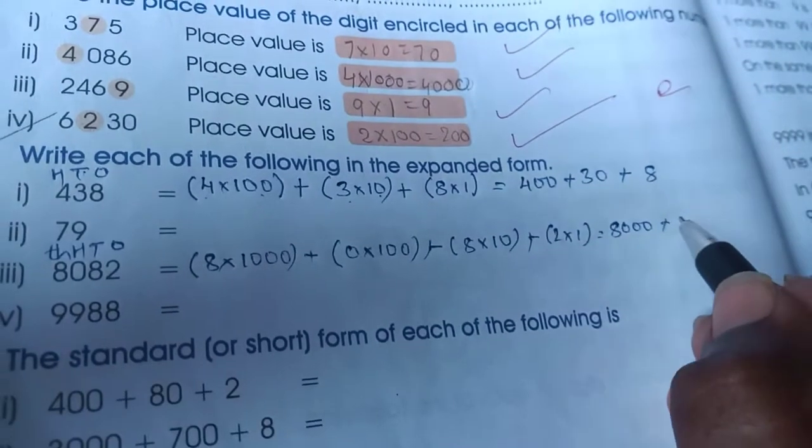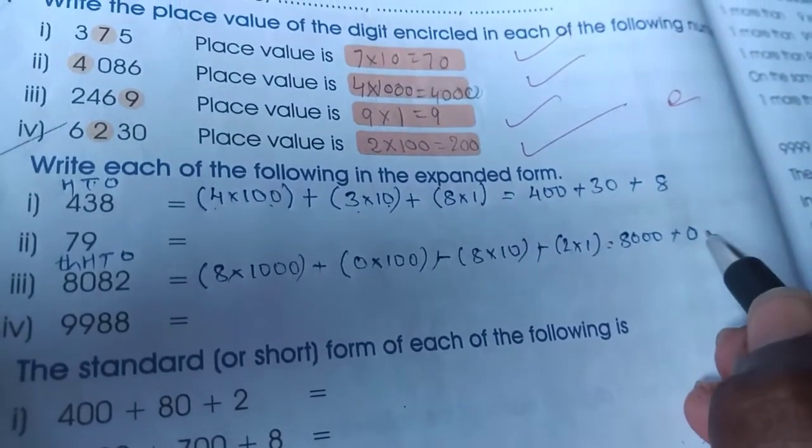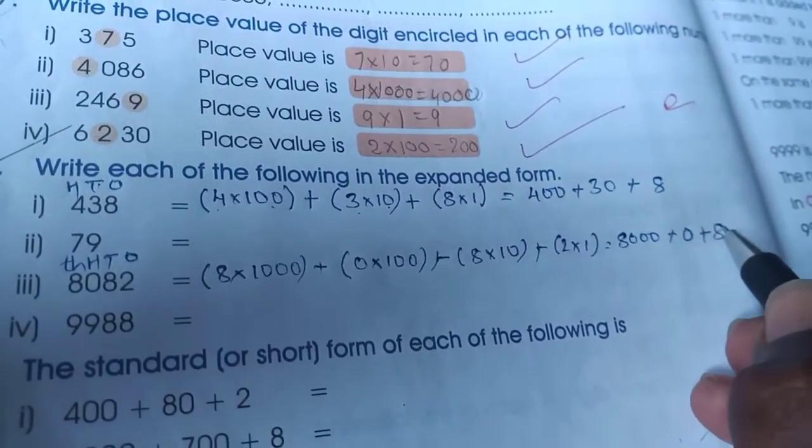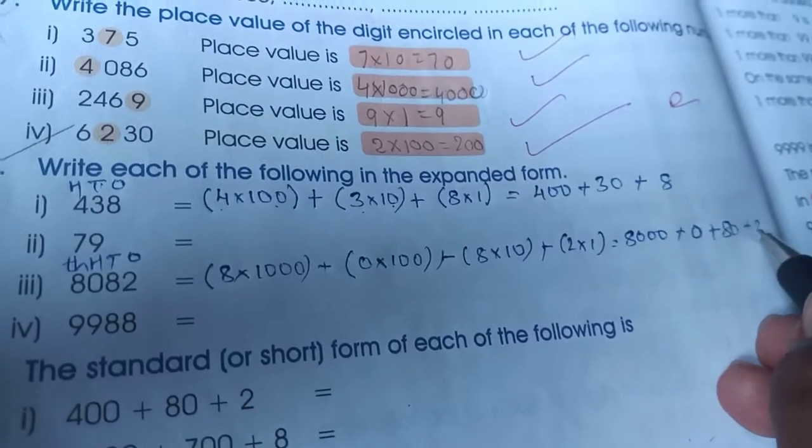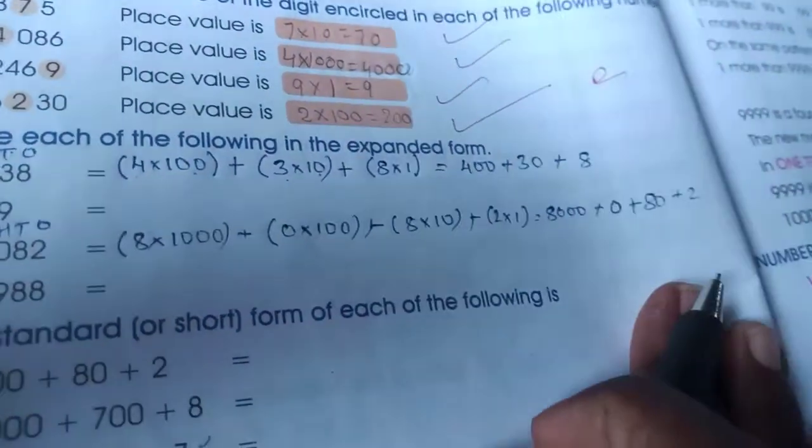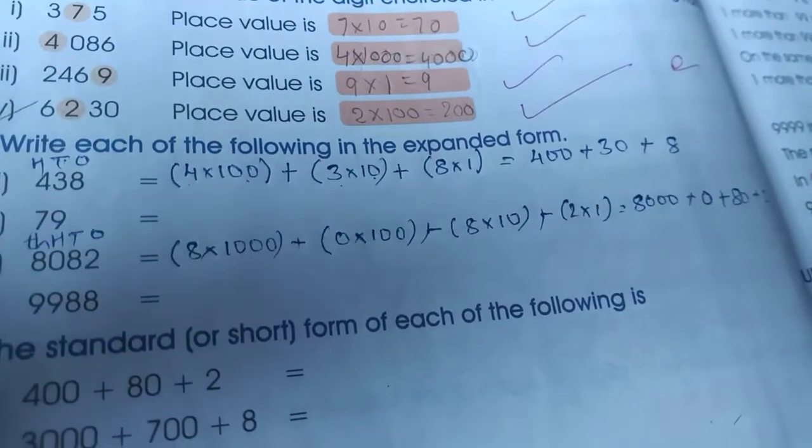Plus 0 into 100, plus 0 into 100 nothing but 0. Any number multiplied by 0 is 0. Plus 8 into 10, 80, plus 2 into 1, 2. So these two remaining problems you have to solve.